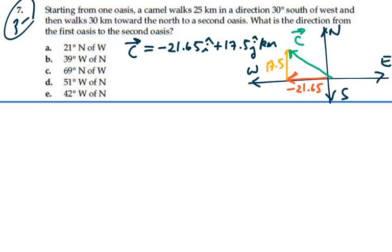So we want to find out what this angle right here is, and how we define it. Just to find the pure angle, that should be the inverse tangent of the magnitude of our y over the magnitude of our x. Leaving out the minus signs, I just want to find the value of that angle. Doing that inverse tangent, I get 38.9 degrees.